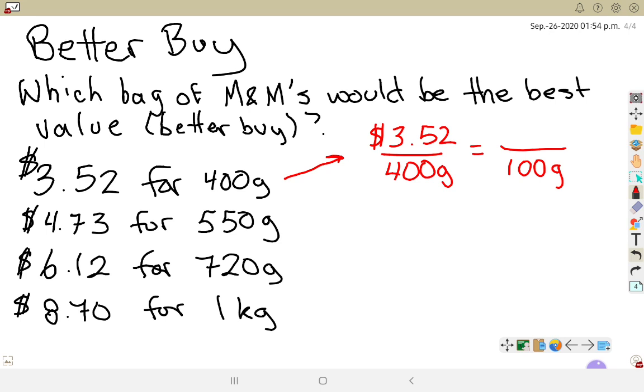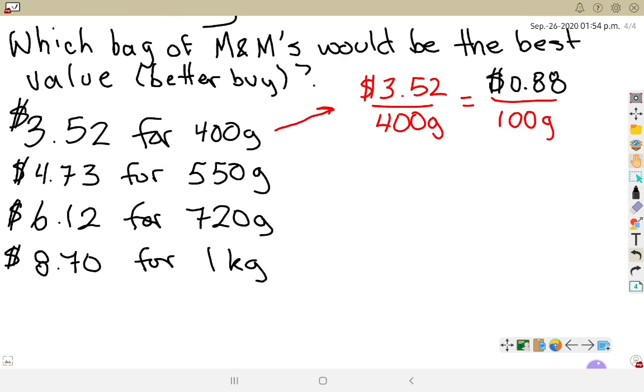Multiplying the two numbers across from one another, 3.52 times 100, dividing by 400, gives me $0.88 per 100 grams. So that one's $0.88 for 100 grams.